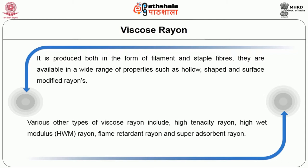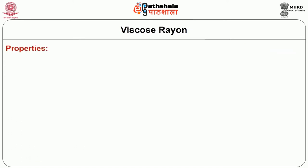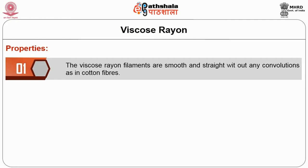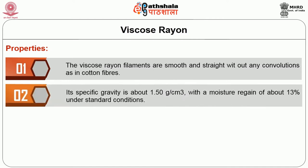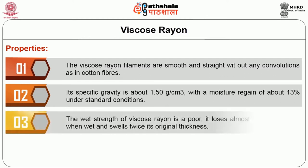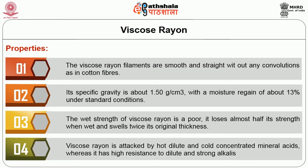Various other types of rayons include high tenacity rayon, high wet modulus rayon or HWM, flame retardant rayons, and super absorbent rayons. The Viscose Rayon filaments are smooth and straight without any convolutions as in cotton fibers. Its specific gravity is about 1.50 grams per cubic centimeter with a moisture regain above 13% under standard conditions. The wet strength of Viscose Rayon is poor. It loses almost half its strength when wet and swells to twice its original thickness. Viscose Rayon is attacked by hot dilute and cold concentrated mineral acids, whereas it has high resistance to dilute and strong alkalies.